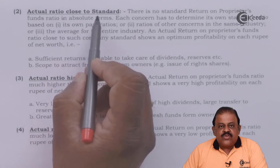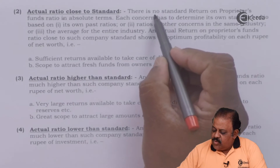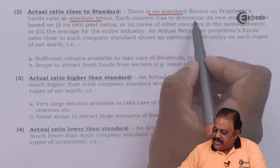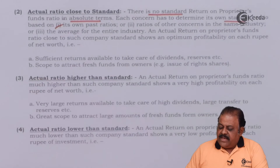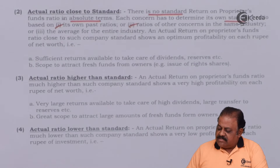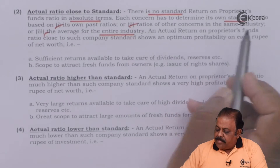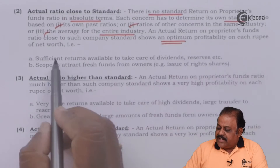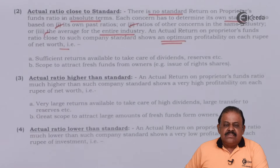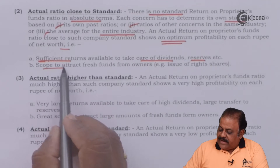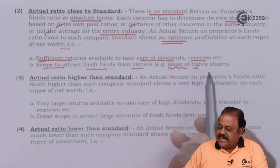There is no standard return on proprietors fund ratio in absolute terms. Each company has to determine its own standard ratio based on its past ratios, ratios of other concerns in the same industry, and the average for the entire industry. An actual return on proprietors fund ratio close to the company standard shows optimum profitability — sufficient returns available to take care of dividends, reserves, and scope to attract fresh funds from owners, for example through the issue of right shares.